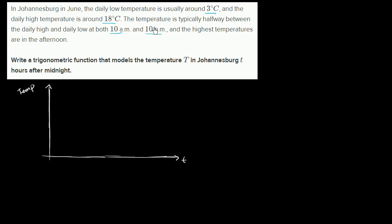The daily low temperature is around 3 degrees Celsius and the high is 18. So let's make this 18 and this 3. We can also think about the midpoint between 18 and 3 that we hit at both 10 a.m. and 10 p.m. 18 plus 3 is 21, divided by 2 is 10.5. So the midline of our trigonometric function is going to be 10.5 degrees Celsius.